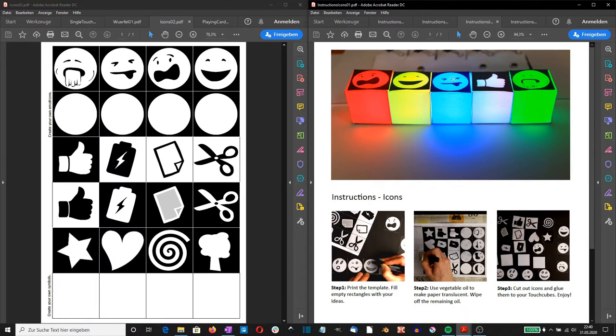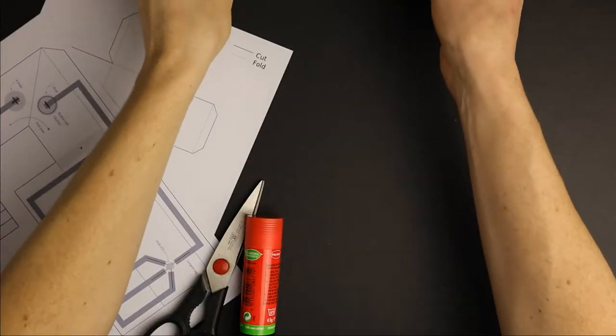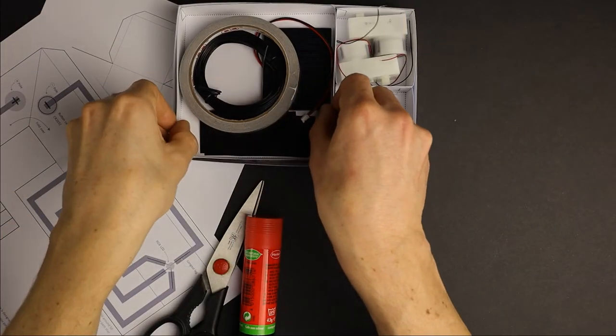I recommend using 160 gram paper for printing my templates, but other paper will be fine too. Besides the printed templates, scissors, and glue, you will only need conductive tape,